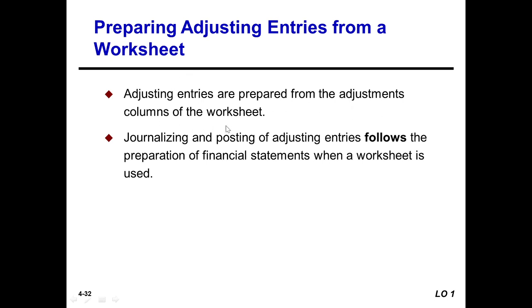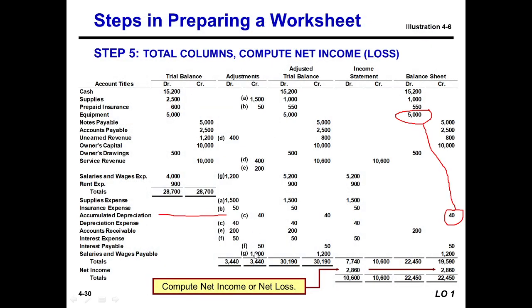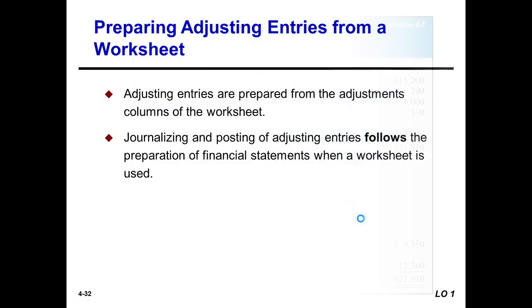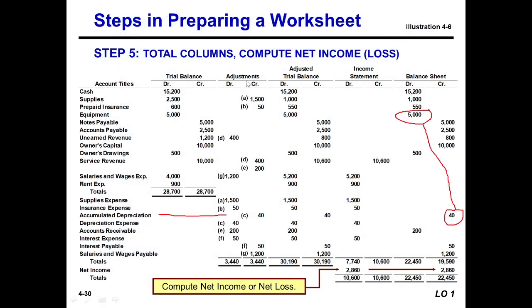Now, preparing adjusting entries from the worksheet: adjusting entries are prepared from the adjustments column of the worksheet. Journalizing and posting the adjusting entries follow the preparation of the financial statements when a worksheet is used. In our worksheet, before preparing the income statement and balance sheet, we need to prepare the adjustments.